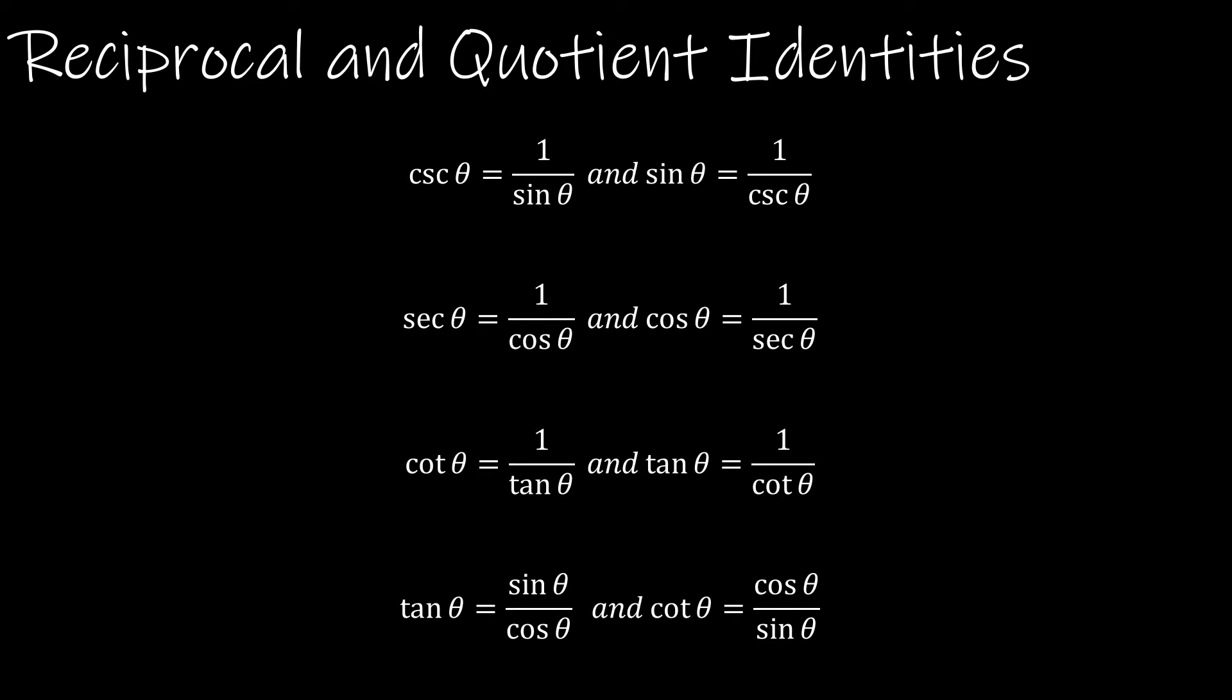Sine is the same as 1 over cosecant, or cosecant is essentially the reciprocal of sine. Secant and cosine are reciprocals, so secant theta is the same as 1 over cosine theta, and cosine theta is the same as 1 over secant theta.